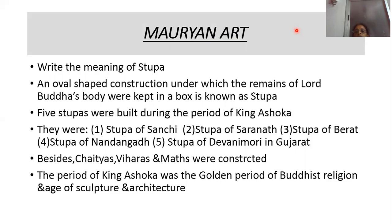King Ashoka did a lot for the spread of Buddhism. The temple of the Buddhist religion is called a Stupa. During his time, many temples were built — those Buddhist temples came to be called Stupas. So who established the Mauryan Empire? Chandragupta Maurya. Who was the most famous Mauryan Emperor? King Ashoka, who after the Battle of Kalinga accepted the Buddhist religion.